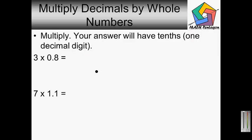Here we want to multiply. Your answer will have tenths, one decimal digit. We have 0.8 times 3. 8 times 3 is 24. Carry the 2. 0 times 3 is 0, plus 2 is 2. Bring down the 1 decimal place. We have 2.4 as our final answer.